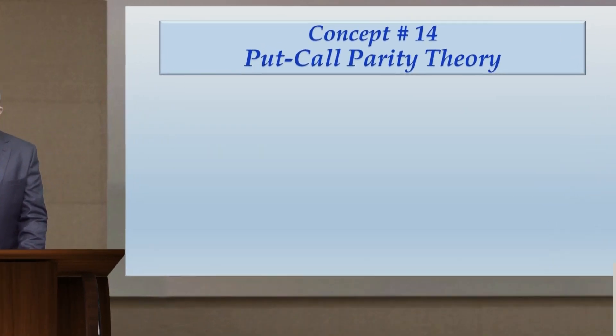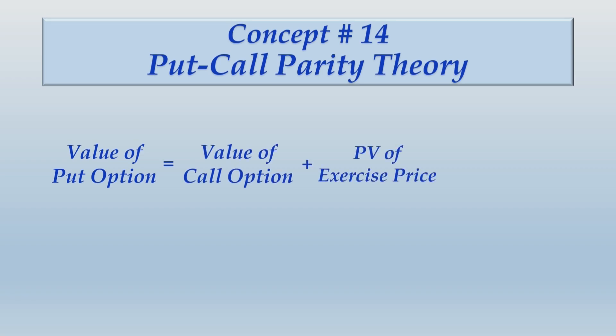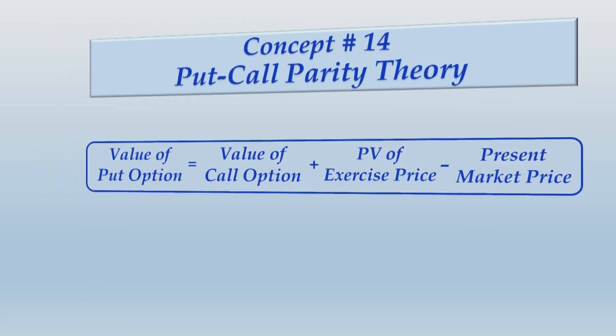The put-call parity equation states: value of put option = value of call option + PV of exercise price − present market price of the share. Let us try to understand the whole equation and this put-call parity theory through the example given in question number 26.